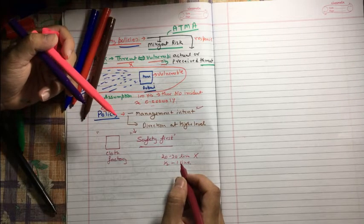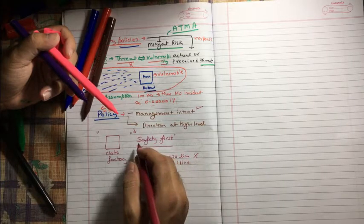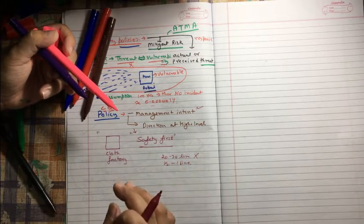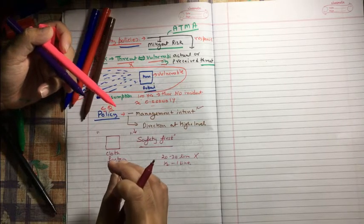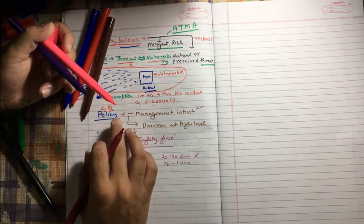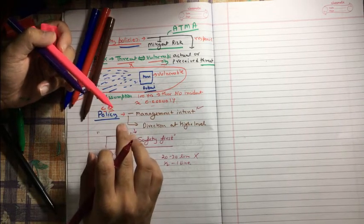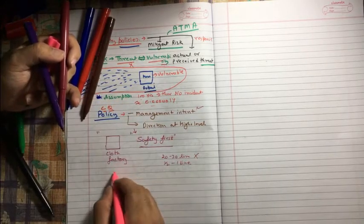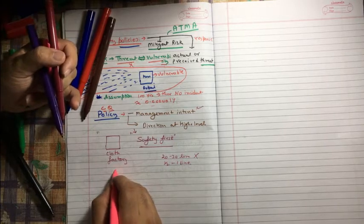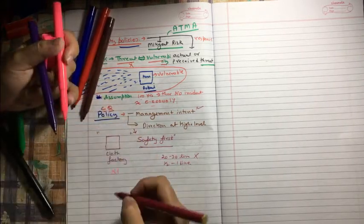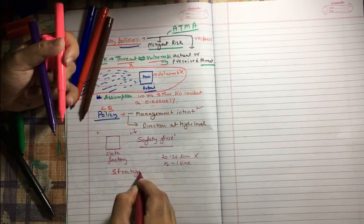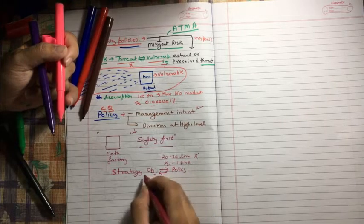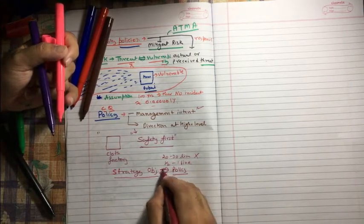So that's the basic detail you must know when it comes to the policy. And when we develop the information security strategy, this policy has to be developed or modified to support the strategic objective. In case we require to modify or develop any new policy, that totally depends upon or is directly proportional with the strategic objective. If my organization goal or organization objective got changed, then in that case we need to change the policy as well. Strategy objective depends on policy. If my strategy objective is changed, then policies also get changed.